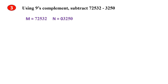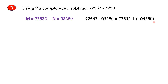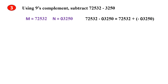This subtraction sentence can be written as M minus N equals M plus negative N. This is the negative number, so we have to find the complement of it. The 9's complement of this number — since this is a 5-digit number, you write five 9's minus 03250. This is N.